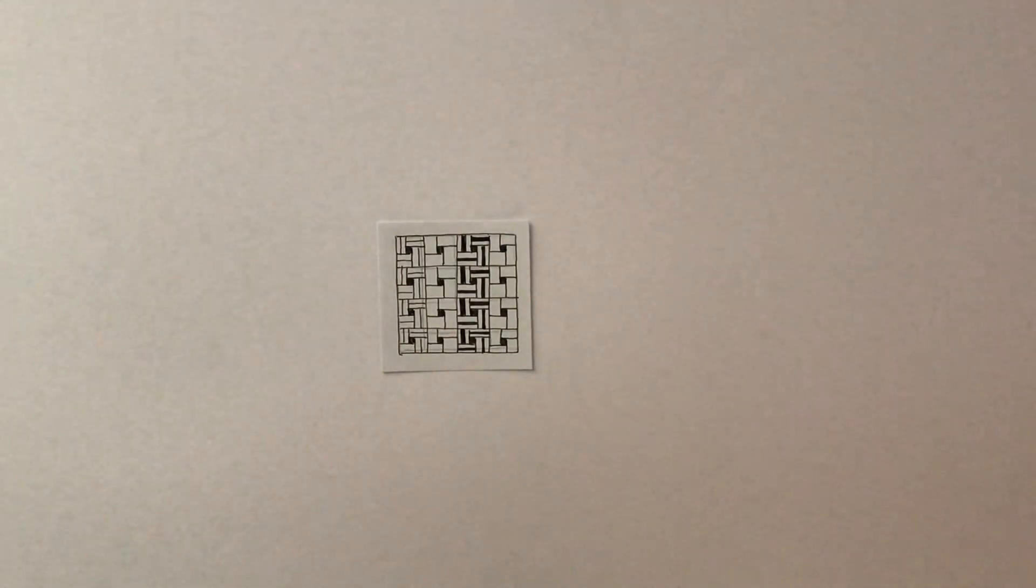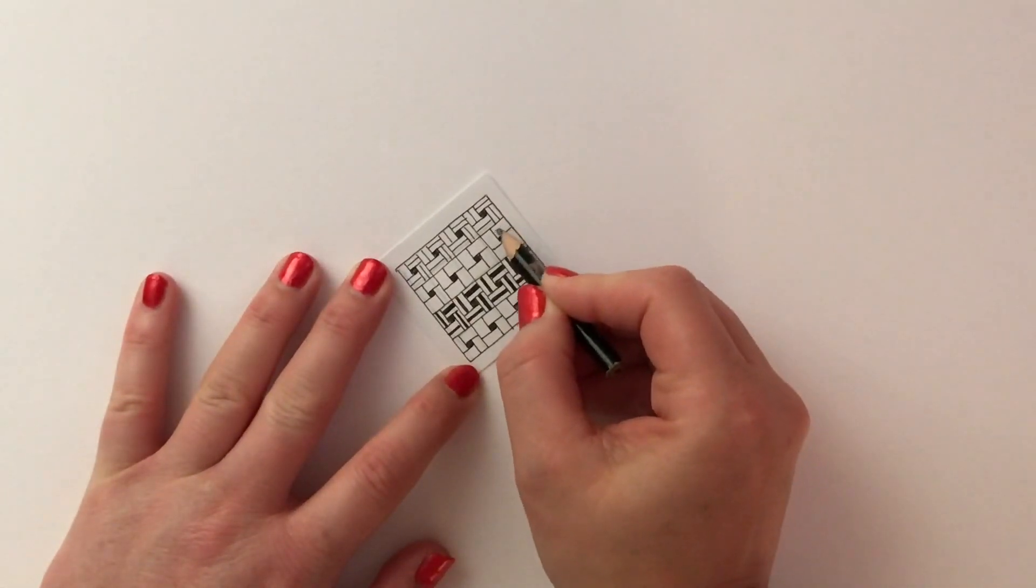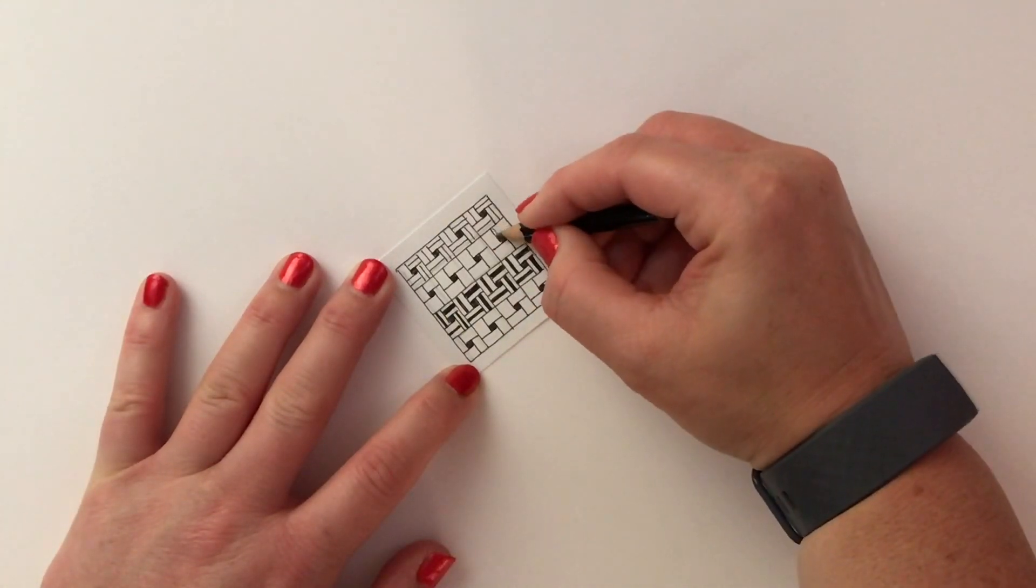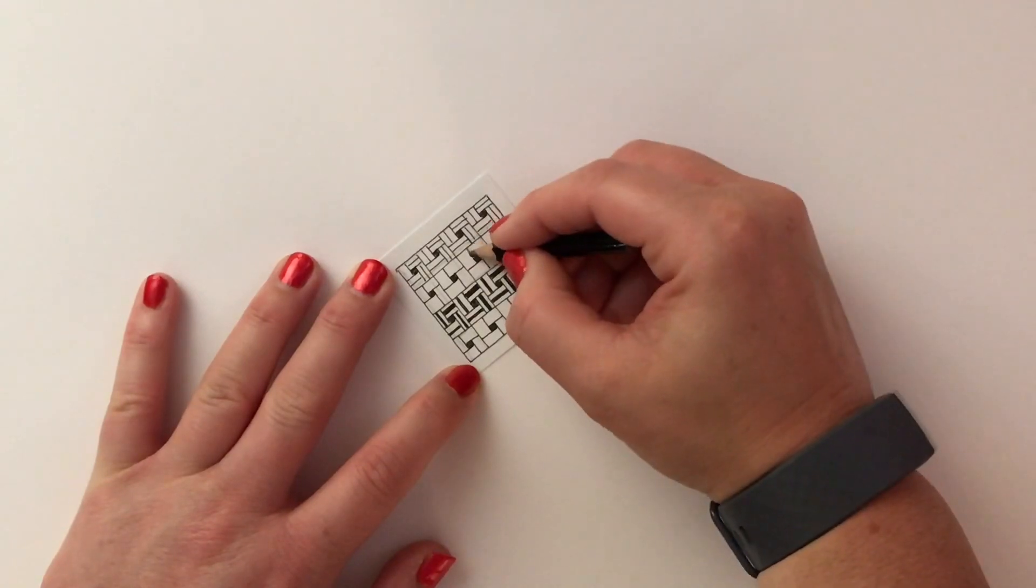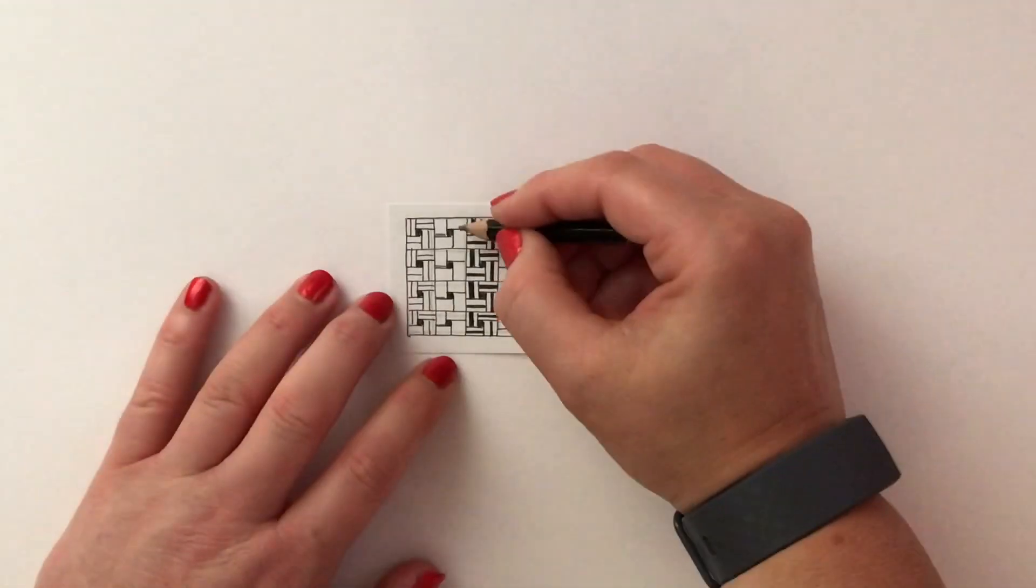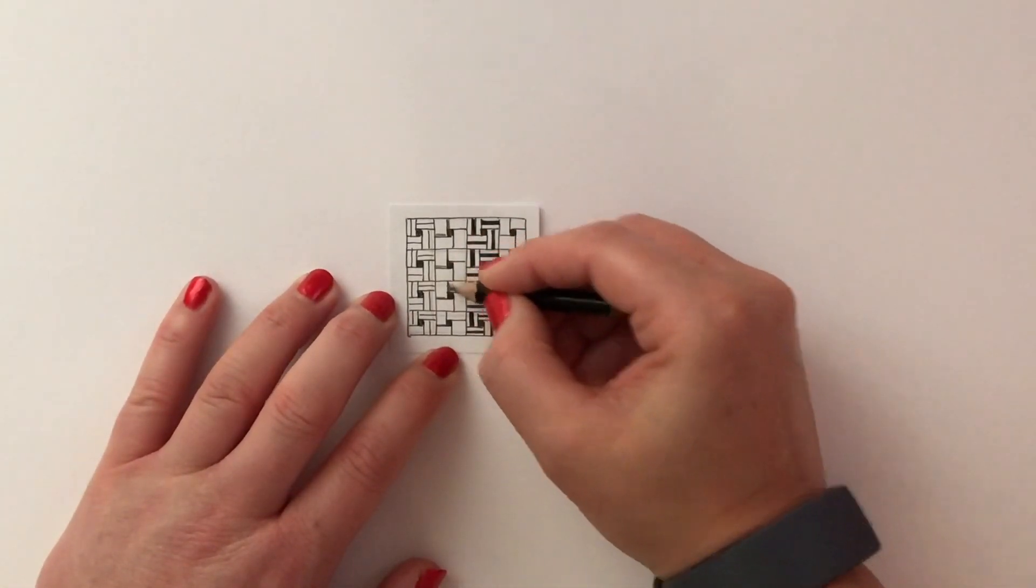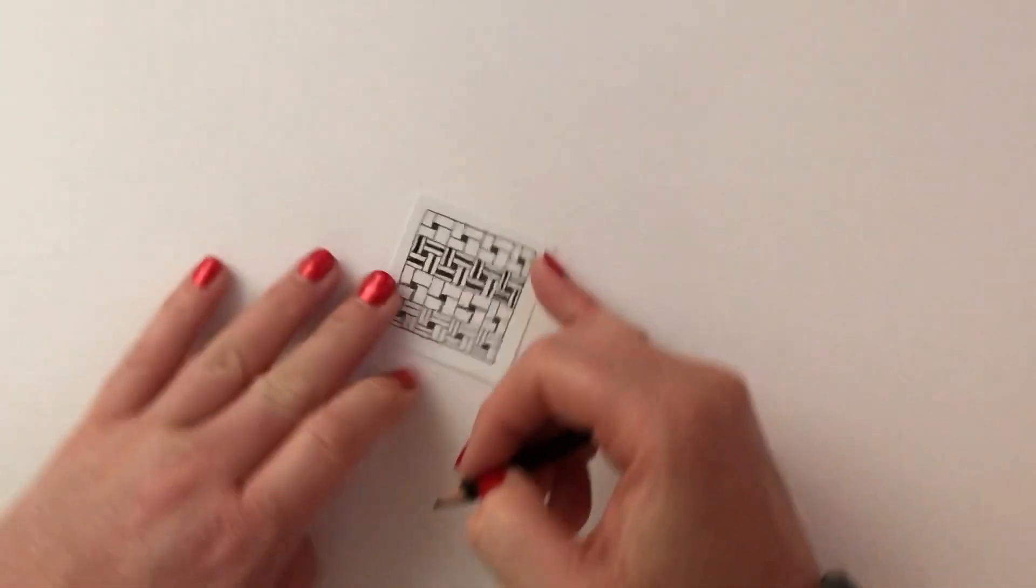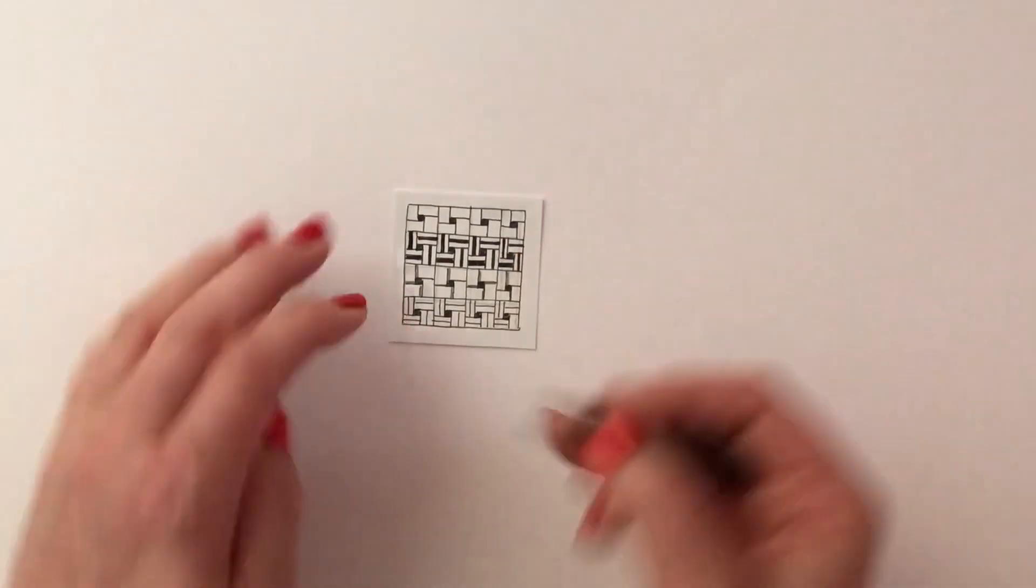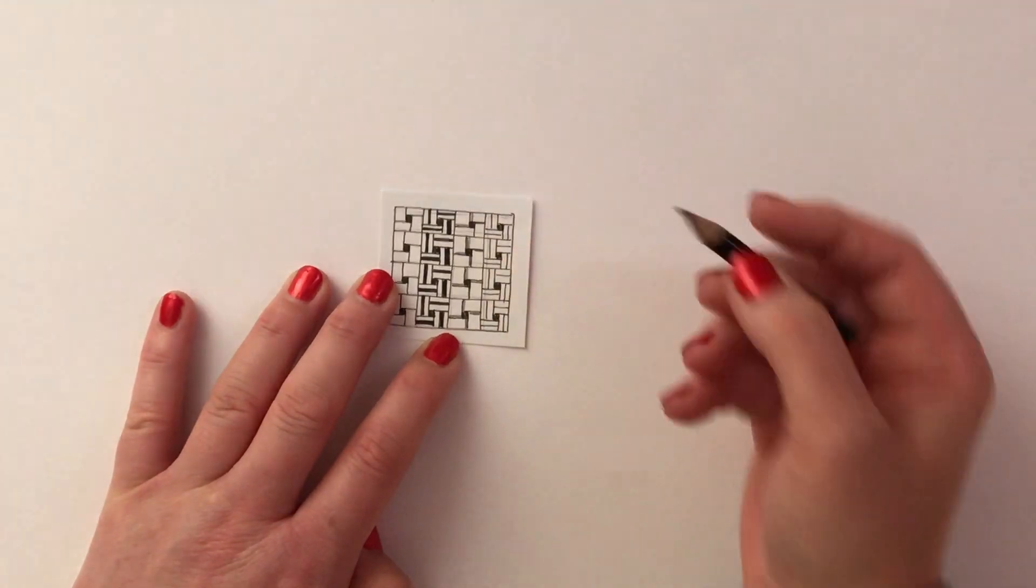The way I shade this is, for me this line here looks like it's going underneath that one so I would put a little pencil line there and repeat it going down the row. This line looks like it's going underneath that one and again I repeat it. This line looks like it's going underneath so I'm actually adding a little bit of pencil along each of those four sides.